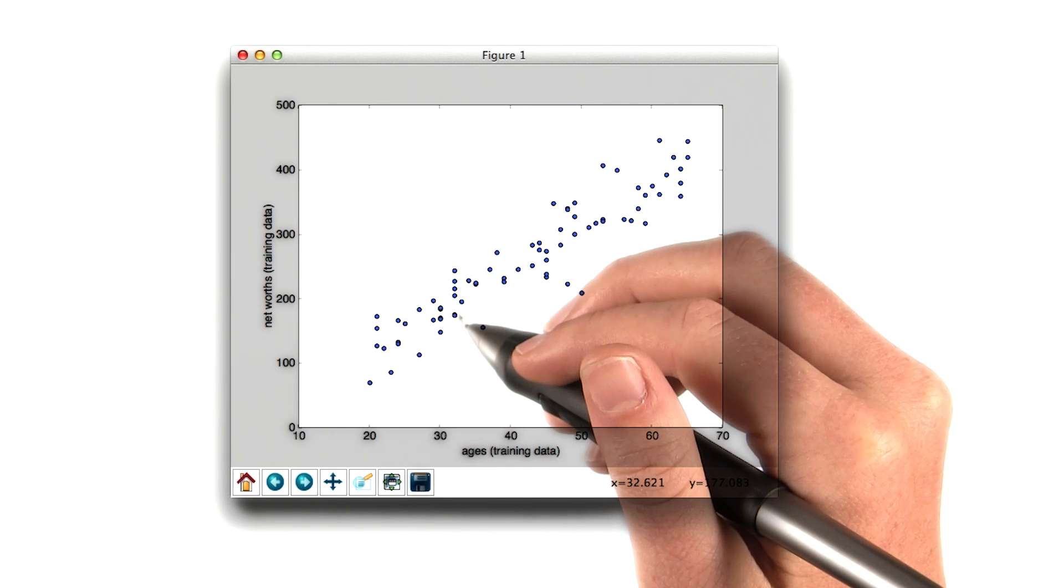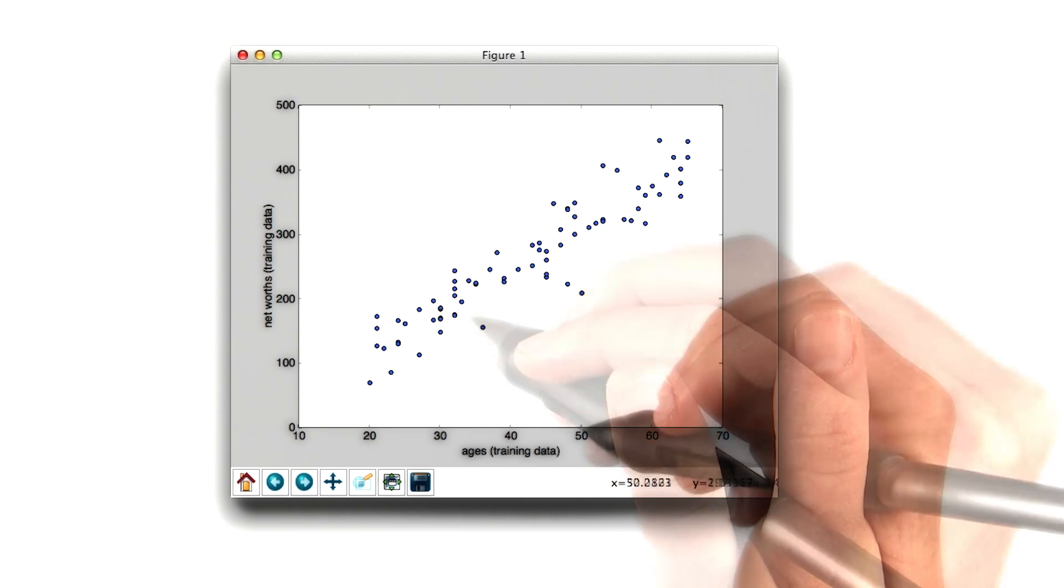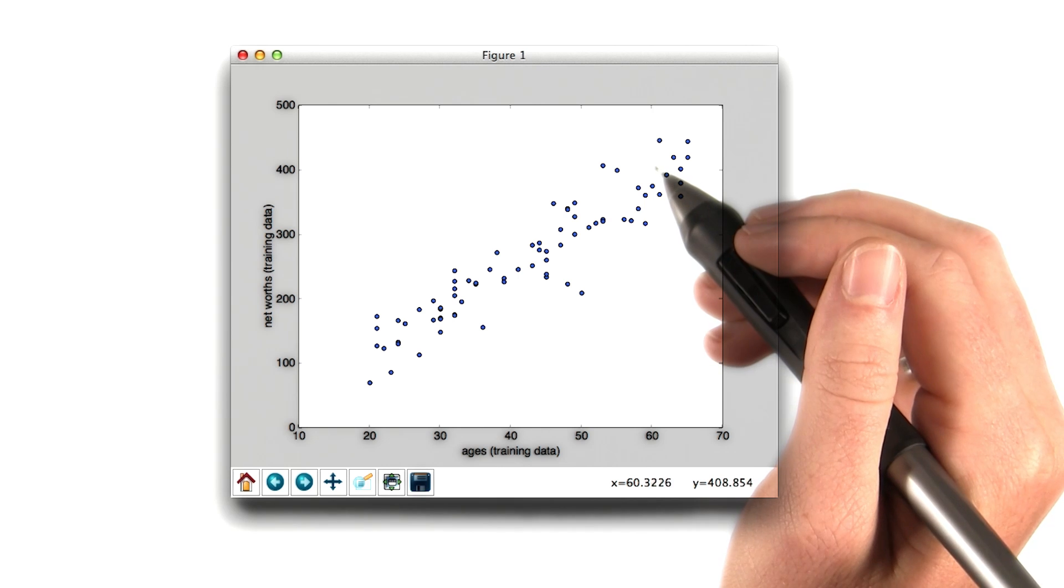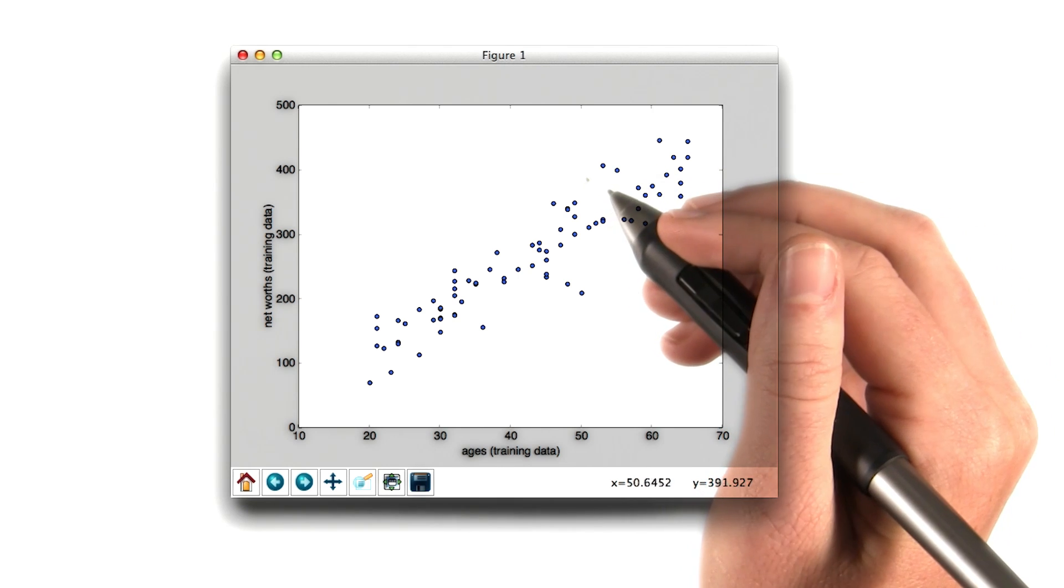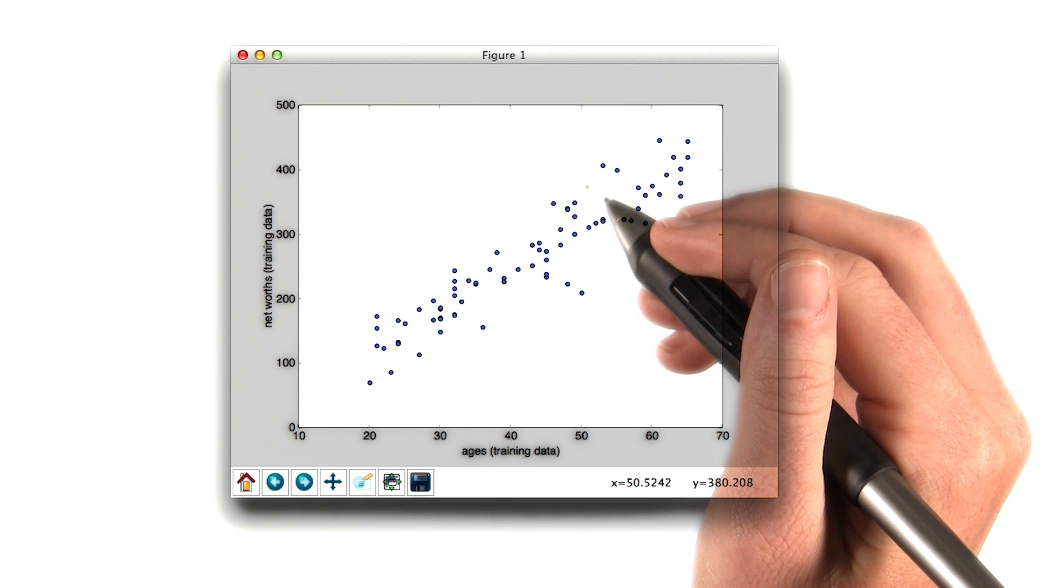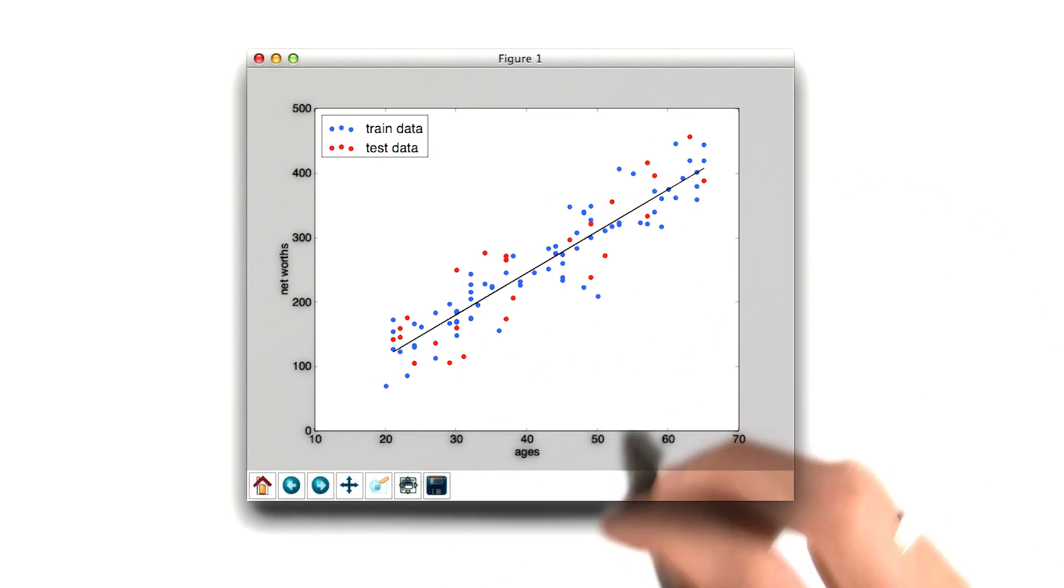However, the way that I generated the data was using the equation that Sebastian was using in the previous few videos. So I start with an age and then calculate a net worth using the coefficient of 6.25. So the answer we get when we perform our regression should give us a coefficient that's pretty close to 6.25, although not exactly because of the noise I've mixed in here. So this is the training data.